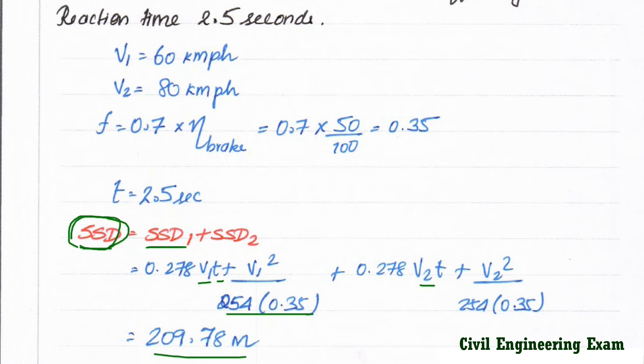That is the stopping sight distance. That is the distance of head on collision. This is the method we can solve the problem. Again we will see in next video.